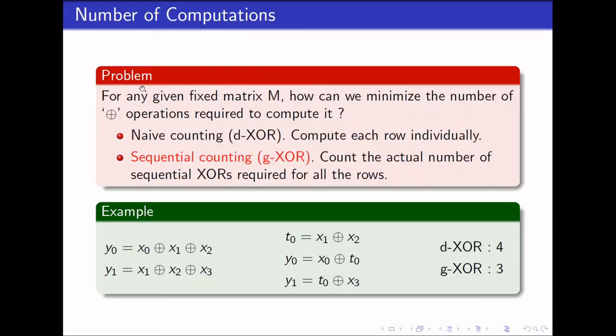Here comes the problem. Given any binary matrix N, how can we minimize the number of XOR operations required to compute it? The first and easiest way to count is the naive counting. Basically, we compute the number of XOR required for each row and then we sum them out. In the example here, we basically count the number of XORs that we can see over here, which is 4. Another way to count it is the sequential counting, or you may encounter in literature as GXOR. This basically counts the actual number of sequential XORs required for all the rows.